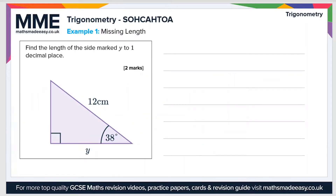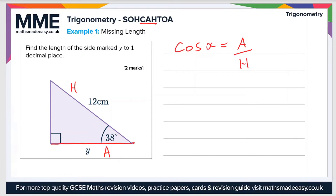Moving on to an example: find the length of the side marked y to one decimal place. First, let's identify what sides we've got. We have the hypotenuse h — that's easy enough to spot. And this side y is the adjacent side, because it's alongside the unknown angle. We need to identify which expression to use. Since we have sides a and h, it's the CAH part — the cosine — of SOHCAHTOA that we need. So cos x equals adjacent over hypotenuse. Substituting our values in, we get cos 38 equals y over h, which is 12.